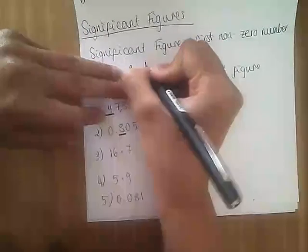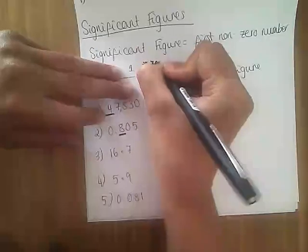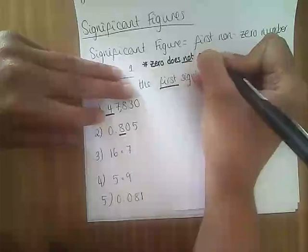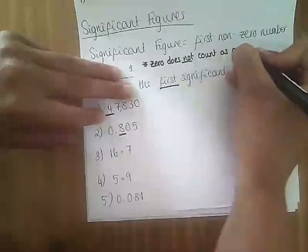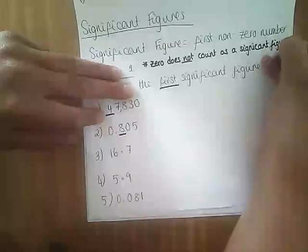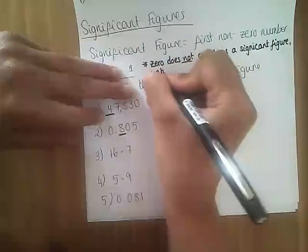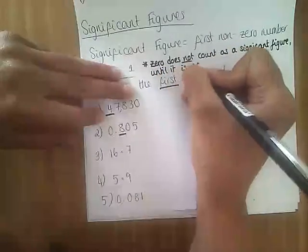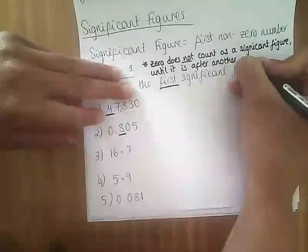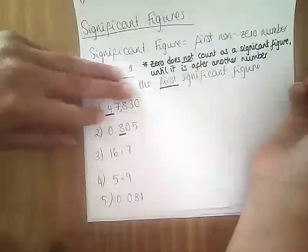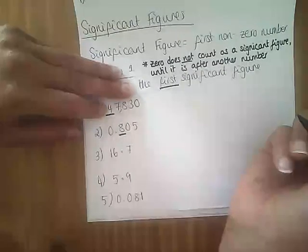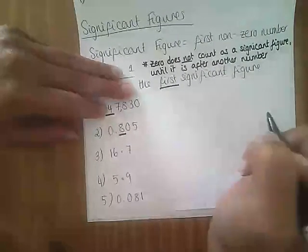Here's a key point to write down: zero does not count as a significant figure until it is after another number. So if it was 0.0085, those zeros wouldn't count. But if it's 0.00805, the zero after the eight would count.